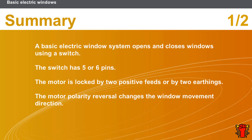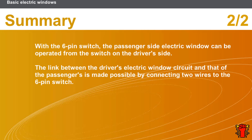In this section we covered the following points: a basic electric window system opens and closes windows using a switch; the switch has five or six pins; the motor is locked by two positive feeds or by two earthings; motor polarity reversal changes the window movement direction. With the six-pin switch, the passenger side electric window can be operated from the driver's side, made possible by connecting two wires to the six-pin switch.